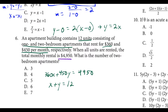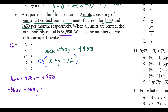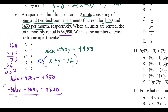We solve this system by elimination, choosing to eliminate x since we're solving for y — the two-bedroom apartments. Multiplying the bottom equation by negative 360, we get 360x plus 450y equals 4,950 on top, and negative 360x minus 360y equals negative 4,320 on bottom. We compute 360 times 12 as 4,320. Adding the equations, the x terms cancel, leaving 90y equals — 4,950 minus 4,320.